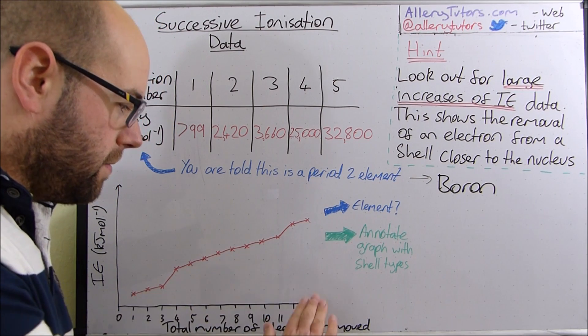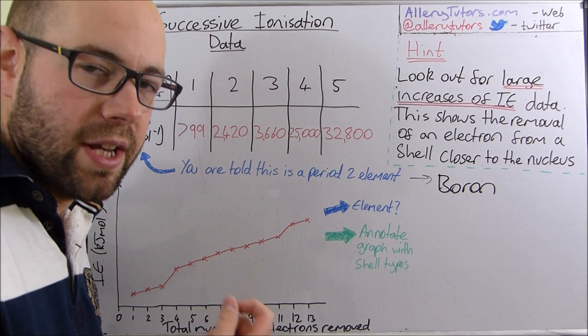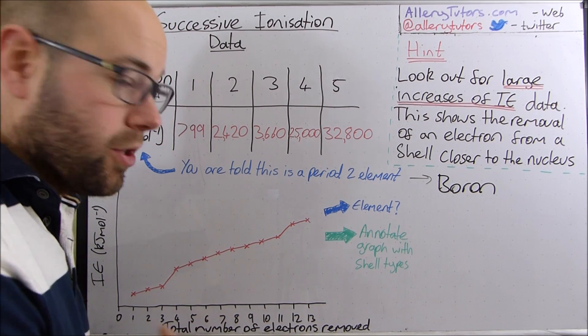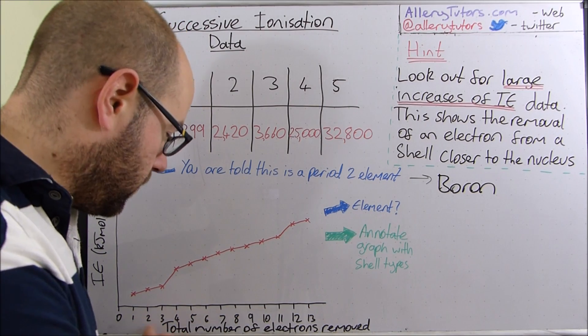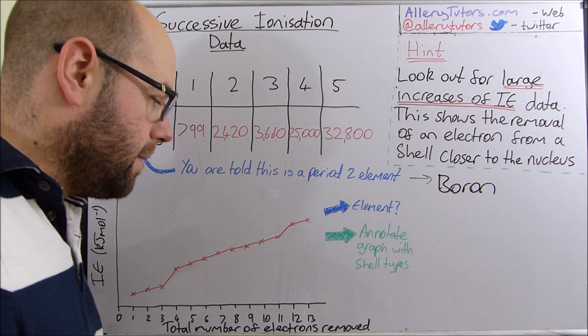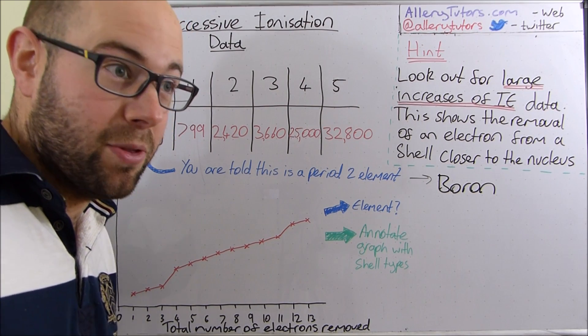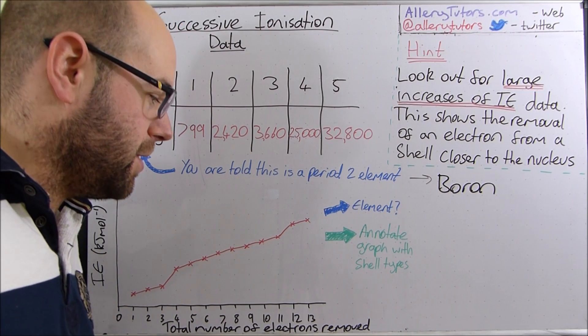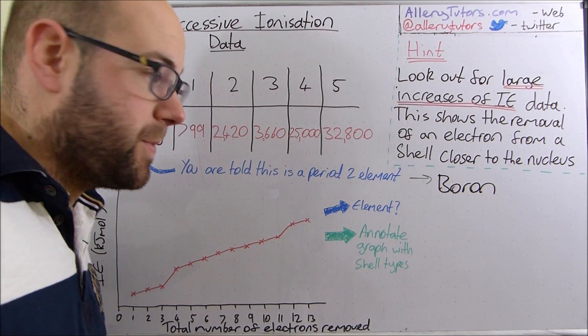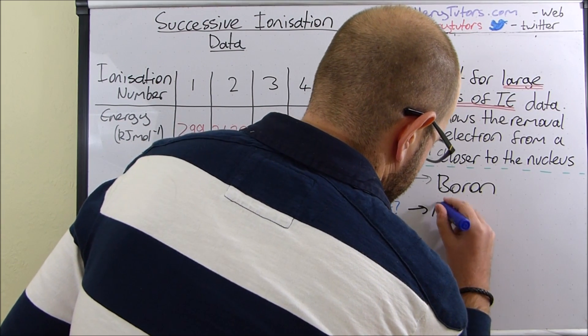So we've got the data here, the first thing you can tell is, just look at the number of electrons, you can see that we've removed 13 electrons from this element, and so all you have to do is look for an element with 13 electrons in it, and this one would be aluminium. So this one's aluminium.